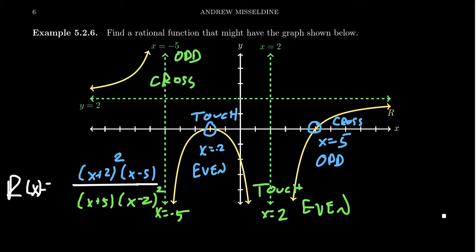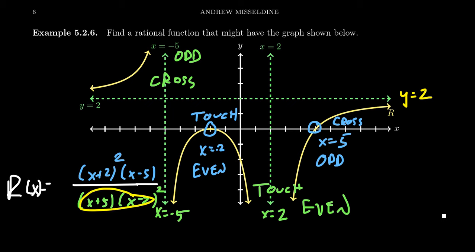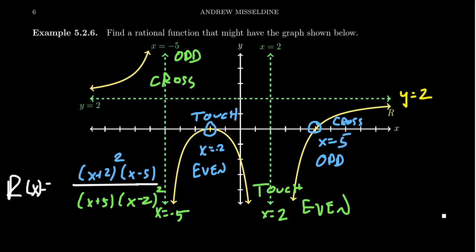The numerator takes care of the x-intercepts and the denominator takes care of the vertical asymptotes. But we're not quite there yet — we also need to consider the horizontal asymptote. Notice we have a horizontal asymptote of y = 2. The horizontal asymptote depends on whether the function is balanced, top-heavy, or bottom-heavy. At the moment, the numerator has degree three and the denominator has degree three, so this is a balanced rational function. The horizontal asymptote will be the ratio of the leading coefficients. We have 2 over 1, so I need to put a coefficient of 2 on top. That gives a rational function with a horizontal asymptote of y = 2.